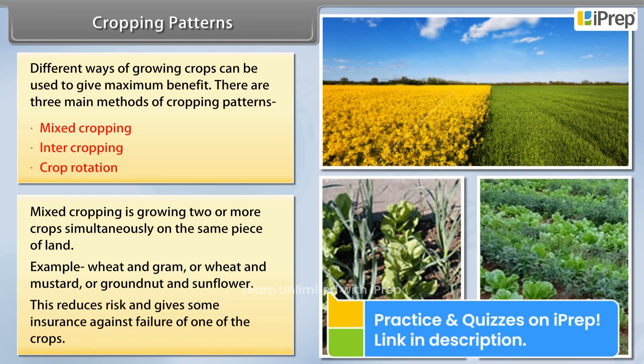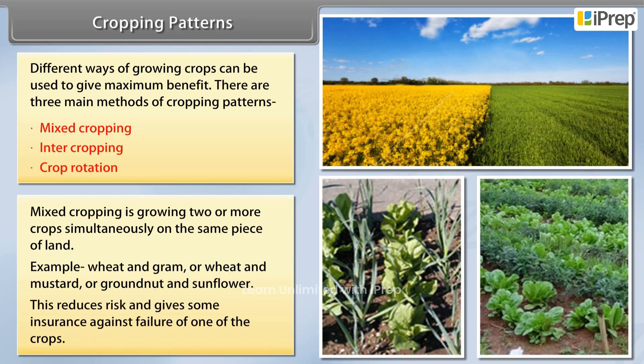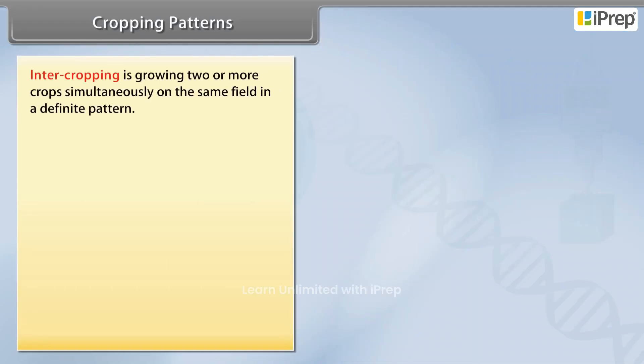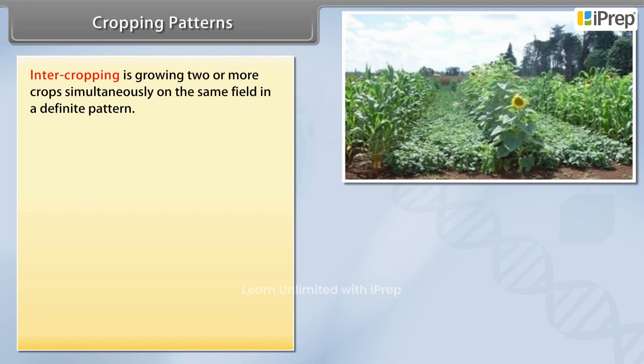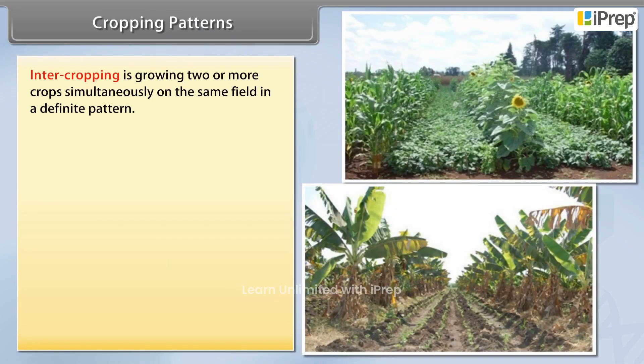Mixed cropping reduces risk and gives some insurance against the failure of one of the crops. Intercropping is growing two or more crops simultaneously on the same field in a definite pattern.